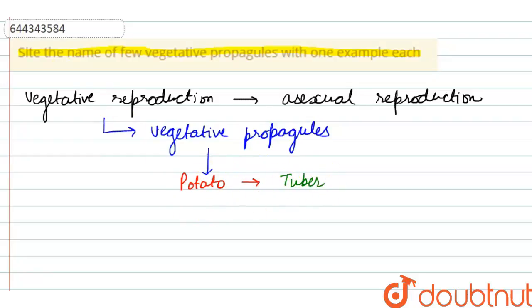Other examples are rhizome of ginger. We can say that this ginger, it is reproduced by rhizome.